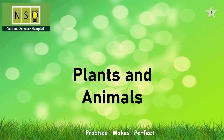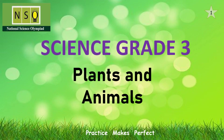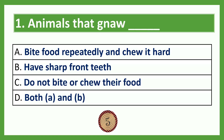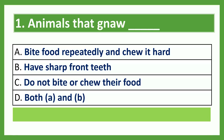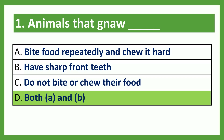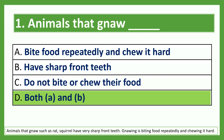The topic for today is Plants and Animals for Grade 3, Class 3. Animals that gnaw — Option A: bite food repeatedly and chew it; Option B: have sharp front teeth; Option C: do not bite or chew their food; Option D: both A and B. The answer is Option D, both A and B. Animals that gnaw, such as rats and squirrels, have very sharp front teeth. Gnawing is biting food repeatedly and chewing it.